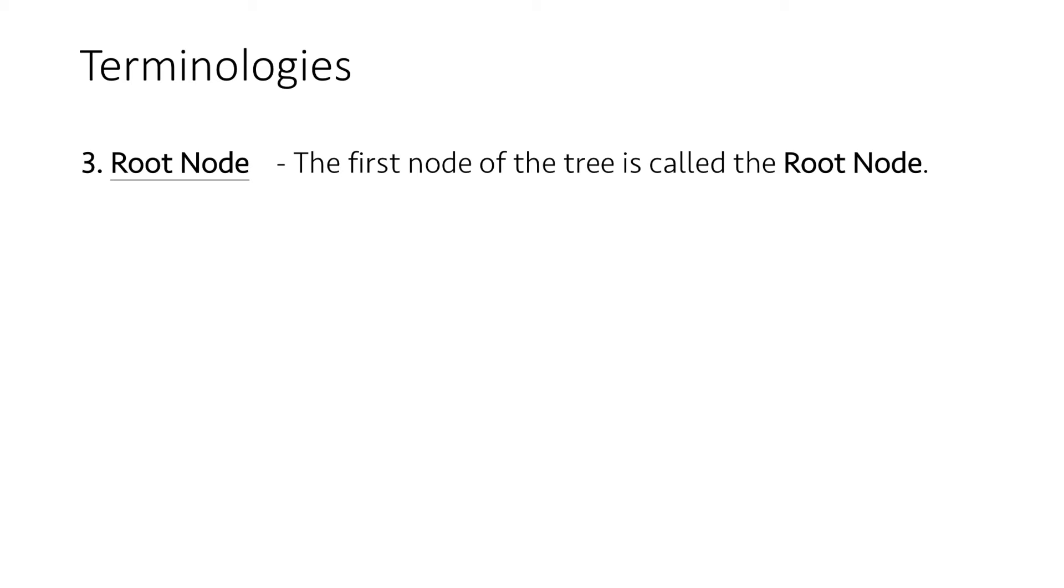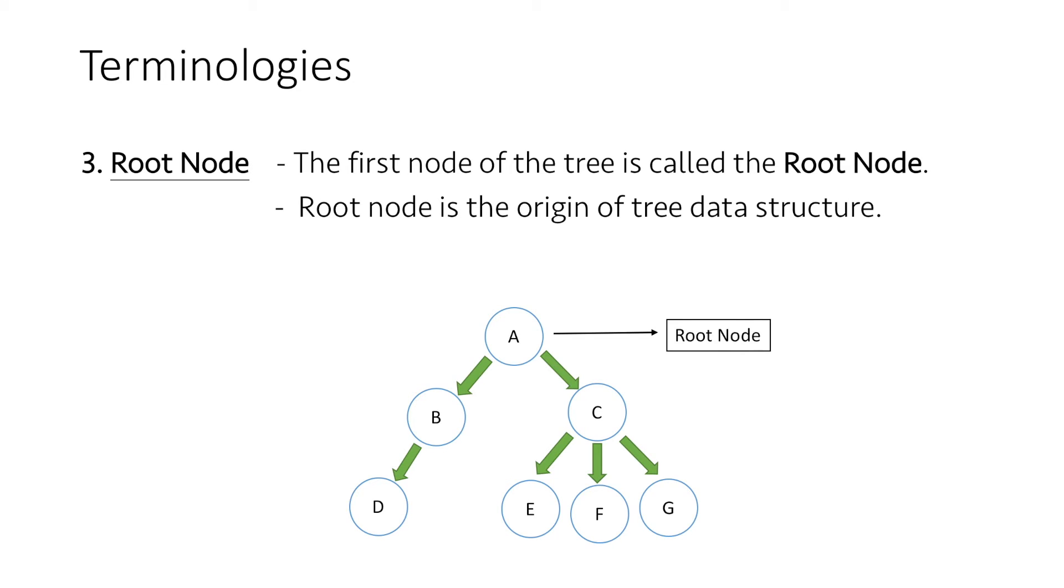Now let's talk about the root node. The first node of the tree is called the root node. In our example, node A is the root node of the tree, and as we can see, the root node is the origin of the tree and in any tree there is only one root node.